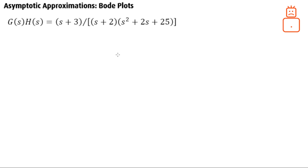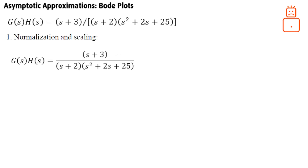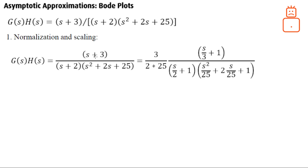Let's start our steps — there are three steps. The first step is normalization and scaling. We factor out the zeros and poles: factor out three from the numerator, factor out two from the denominator, and for the complex poles factor out the natural frequency squared, which is 25. Eventually we get 3 over 50, and this normalized and scaled form is ready for plotting.